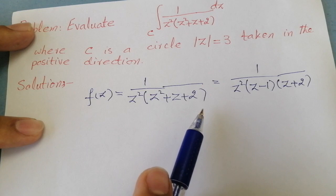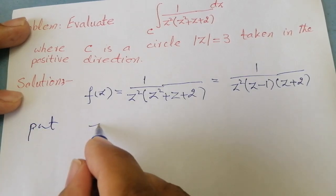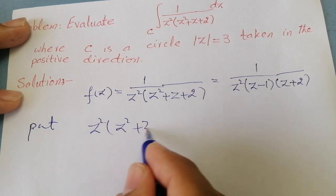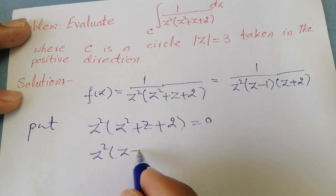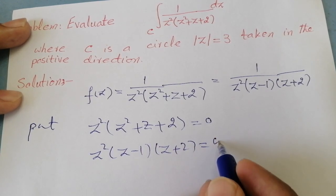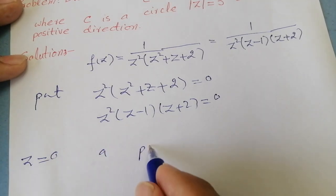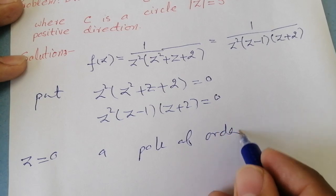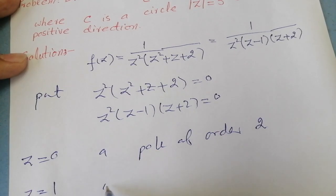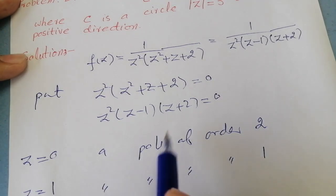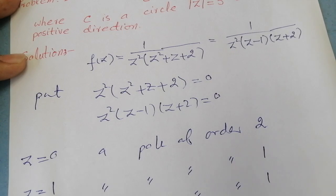Now we have to obtain the singular points of this function. For that purpose, we put z² times (z − 1) times (z + 2) equal to 0. From this we get z = 0, which is a pole of order 2; z = 1, which is a simple pole; and z = −2, which is again a simple pole of the given function.